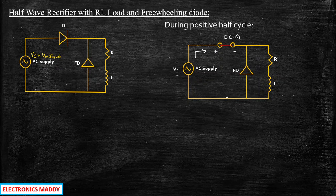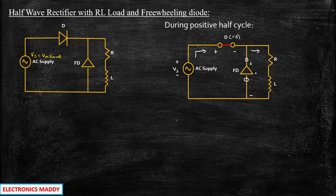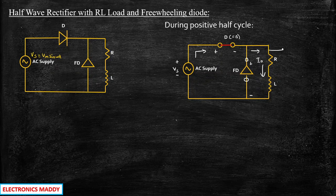Now, since the negative terminal is connected to the anode of the freewheeling diode and the positive terminal is connected to the cathode of the freewheeling diode, it acts as an open circuit at this point. As a result, no current flows through this path. The current flows through the main path, where iout is the current flowing through the load terminals and vout is the voltage obtained across this point.